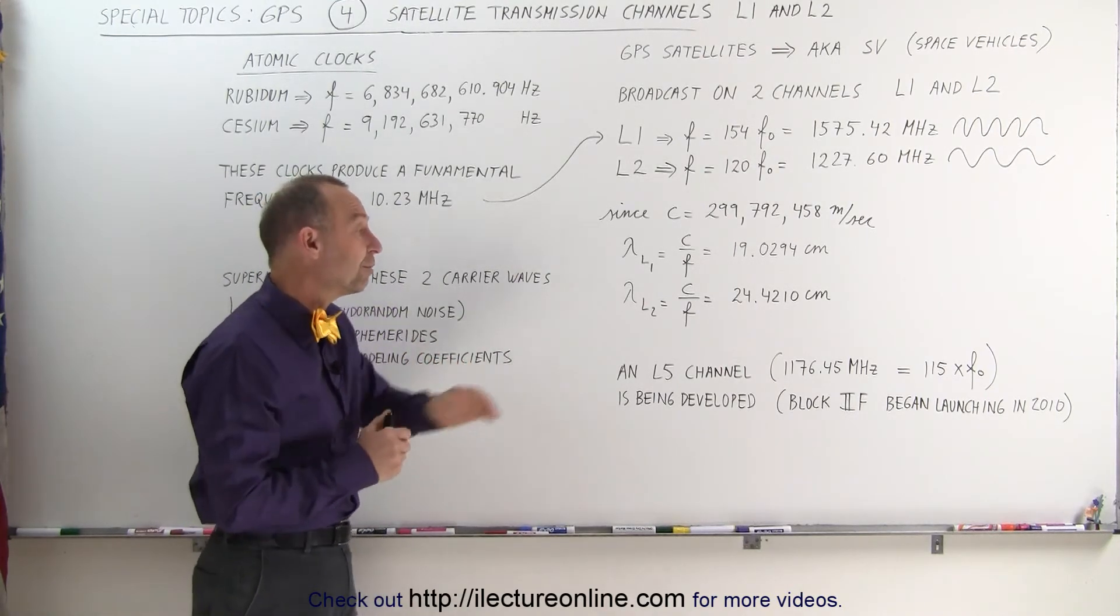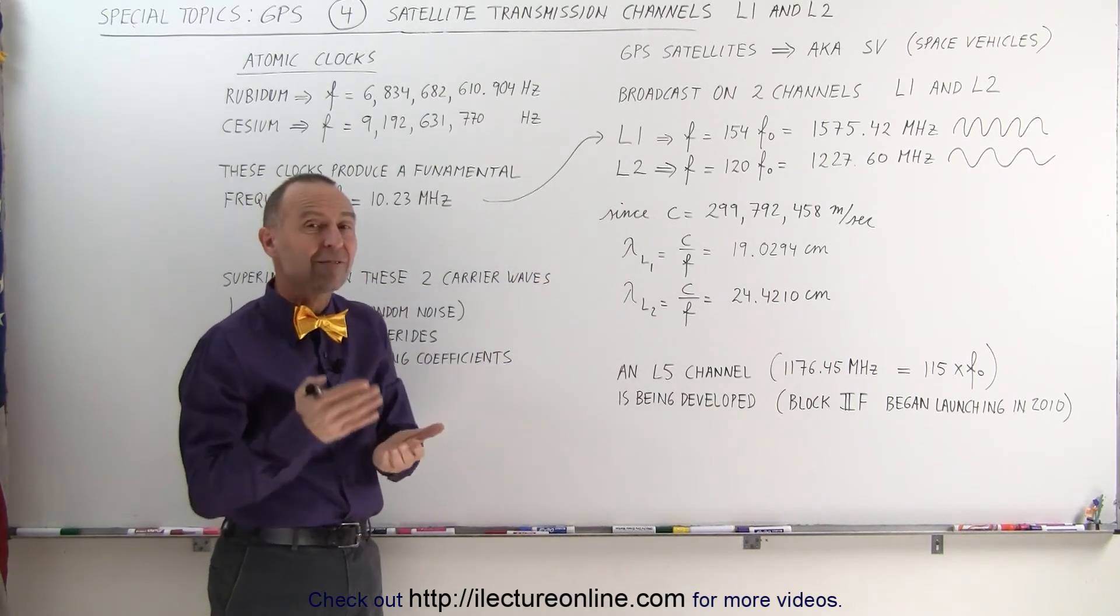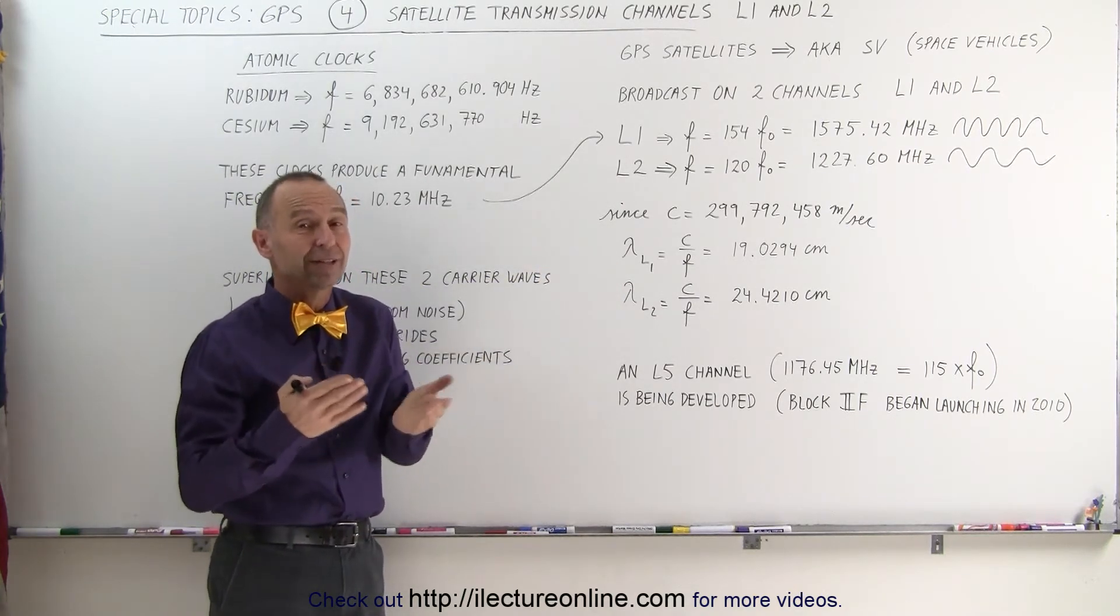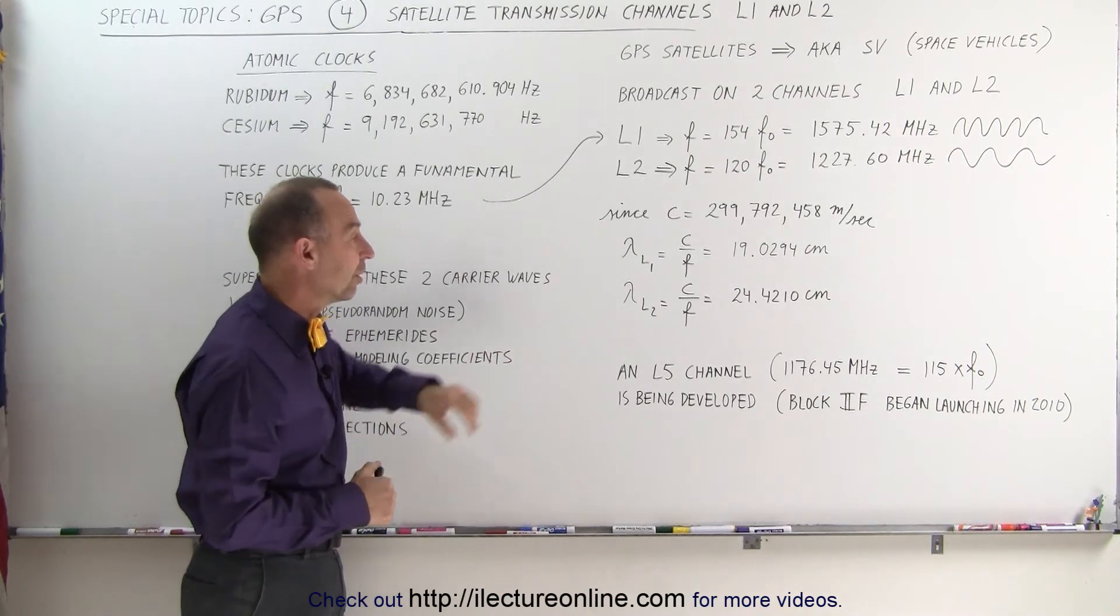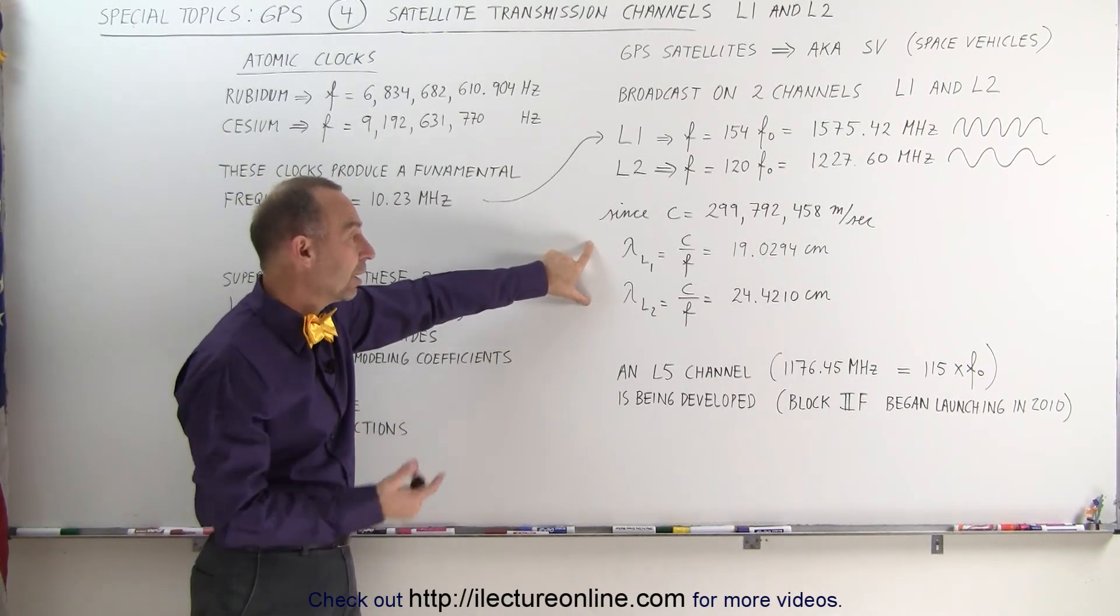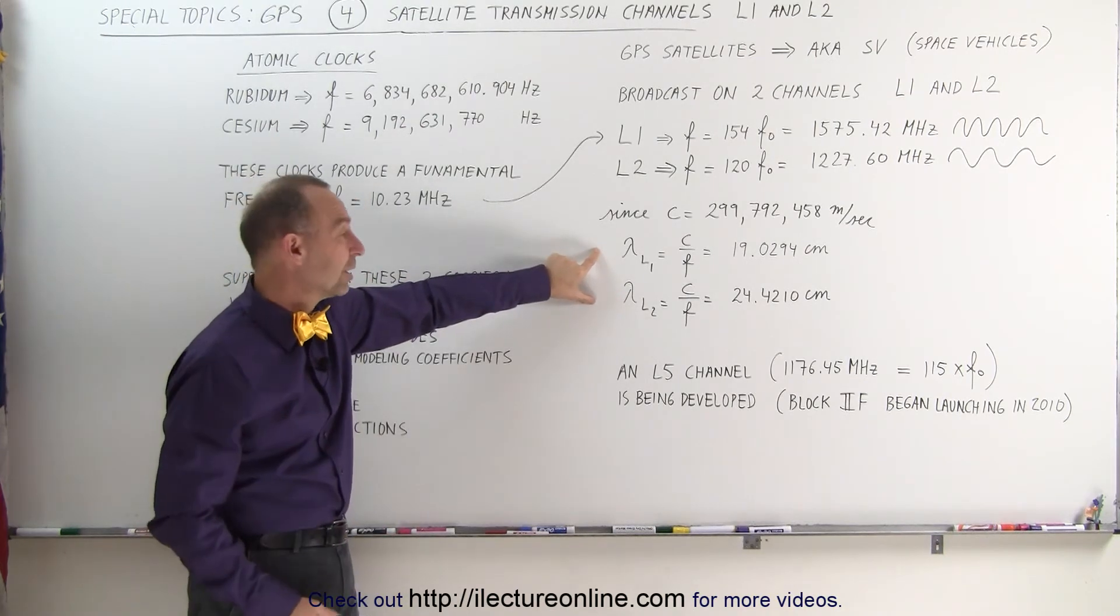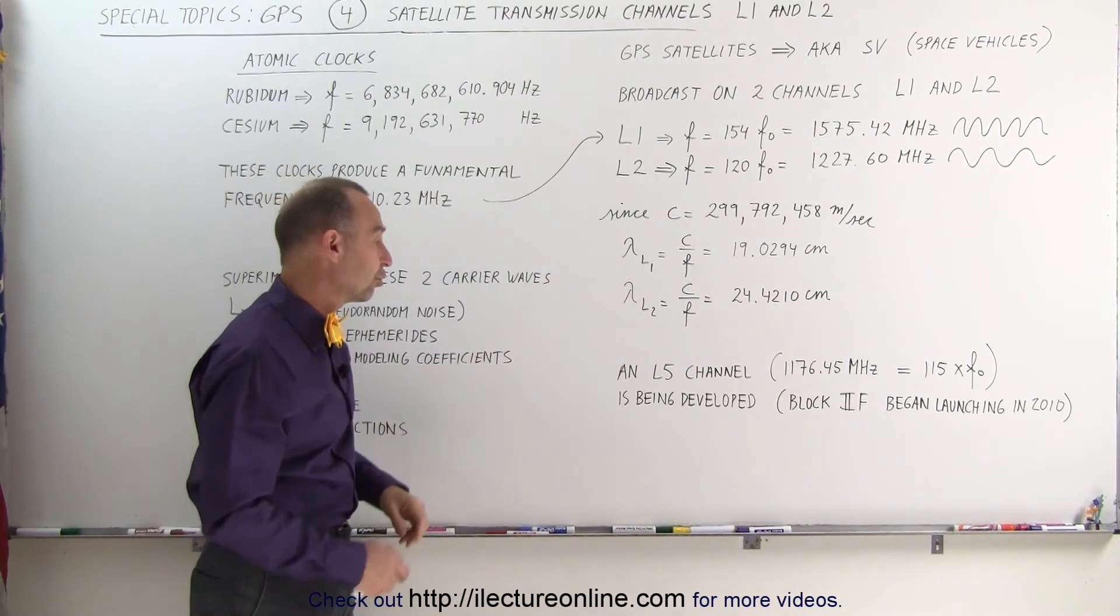Why were those two carrier waves picked? Because those two waves at those particular wavelengths have less interference with the atmosphere than many other types of wavelengths. So it offers a really good window for the transmission of the signals coming in from the satellites. That's why this particular carrier frequency and wavelengths were chosen.